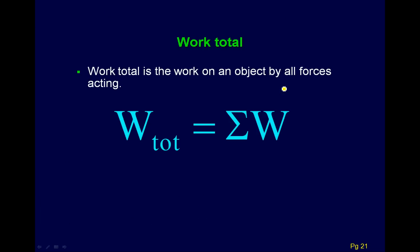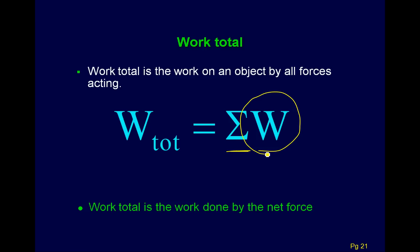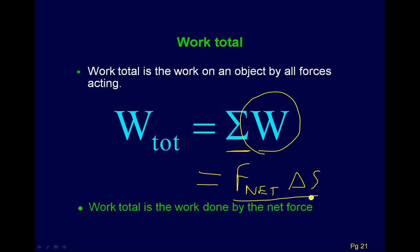The total work on an object is the sum of all the works done by all the forces acting on it. Another way to think about it: total work equals the work done by the net force, which is the net force times the displacement ΔS. You can think about it either way.